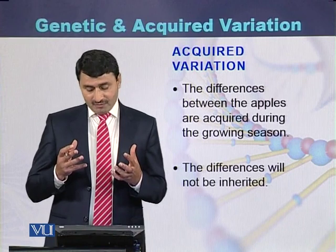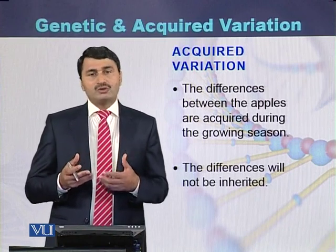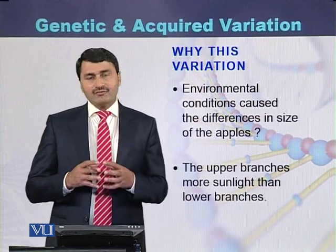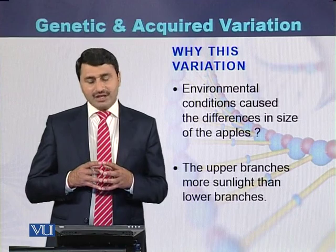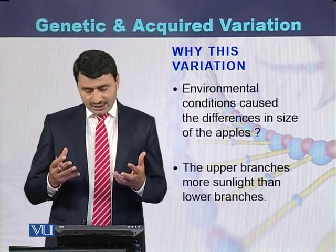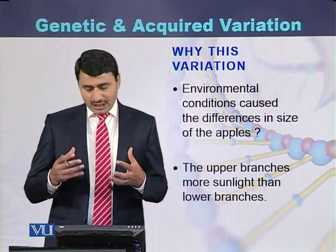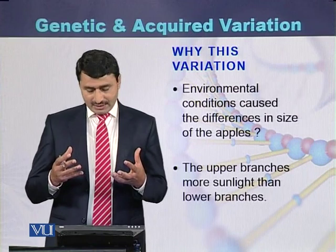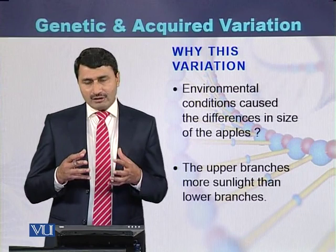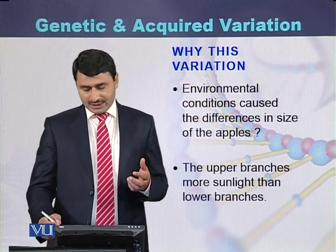These differences will not be inherited in the next fruiting of the plant. The reason we see this kind of variation is due to the environmental conditions under which these apples grew. The upper branches received more sunlight compared to the lower branches.